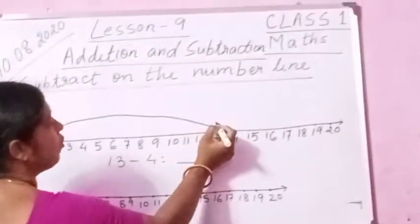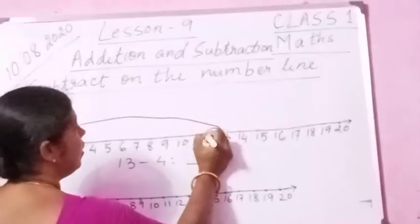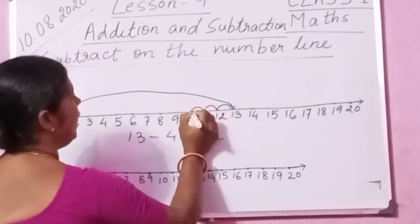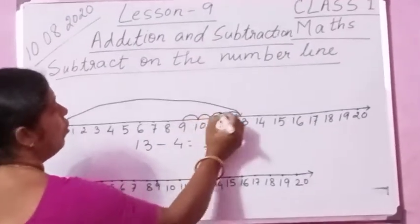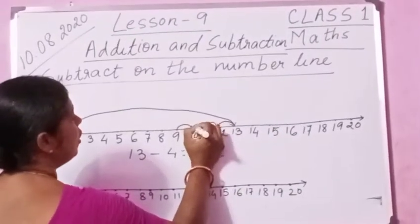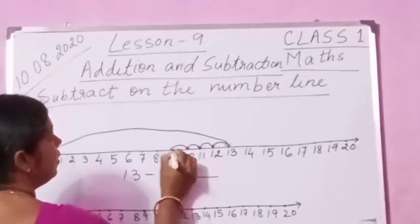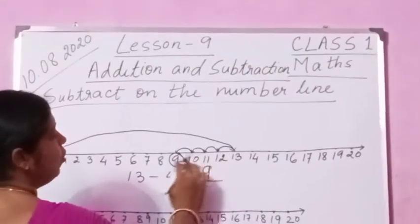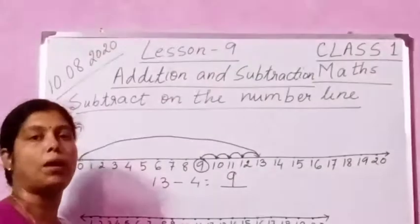So from here you are going to count 1, 2, 3, 4. Let us count 1, 2, 3, 4. See, what is the answer? 9. Let us just make a small arrow. Please see the answer: 9. This is 9. 9 is the answer. From 13 you come back 4 places.